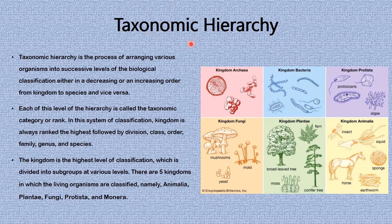We'll be looking at the taxonomic hierarchy of classification of living organisms. Taxonomic hierarchy is the process of arranging various organisms into successive levels of biological classification, either in a decreasing or increasing order from kingdom to species and vice versa. Each level of the hierarchy is called the taxonomic rank or category.